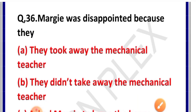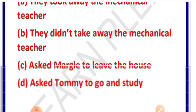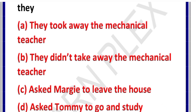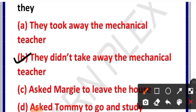Question number 36: Margie was disappointed because — Options: A. they took away the mechanical teacher, B. they didn't take away the mechanical teacher, C. asked Margie to leave the house, D. asked to go and study. Correct answer is option B — they didn't take away the mechanical teacher. Kyunki mechanical teacher ko le kar nahi gaye the; county inspector ne waheen uski coding set kar di thi, isliye woh nirash thi.